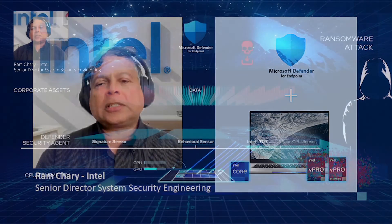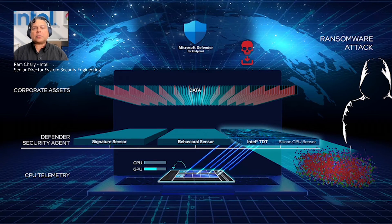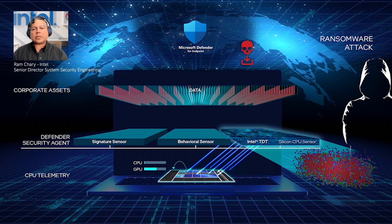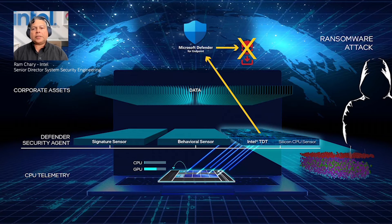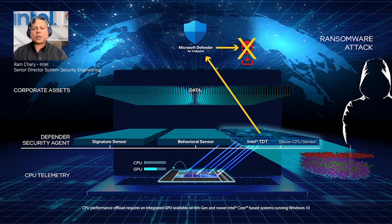This is where you'll see Intel TDT kick in as the ransomware begins to encrypt the target data files. As it executes on the CPU, the telemetry is filtered using AI-based machine learning techniques. Intel TDT also provides a mechanism to offload the extra AI compute cycles from the CPU to the integrated GPU to keep the impact on user experience to a minimum. Finally, the AI correlates to detect the attack, and Intel TDT raises a signal which Microsoft Defender for Endpoint could use to remediate and terminate the offending process.